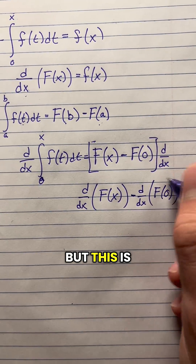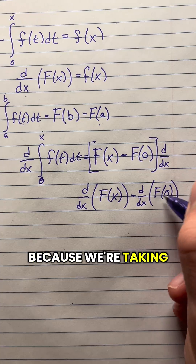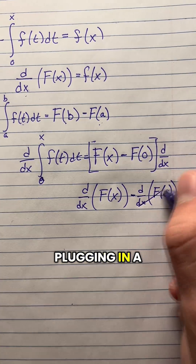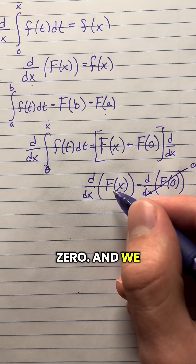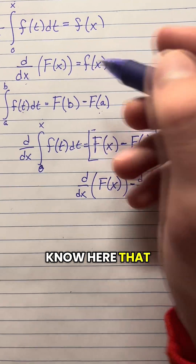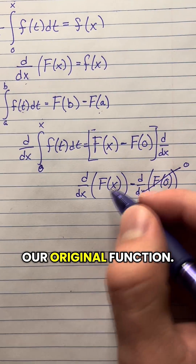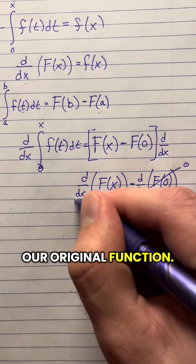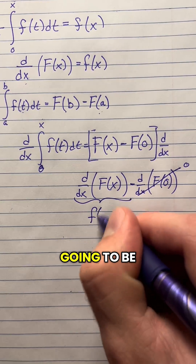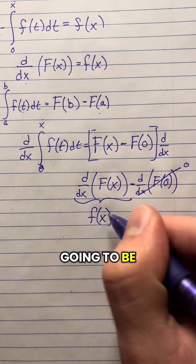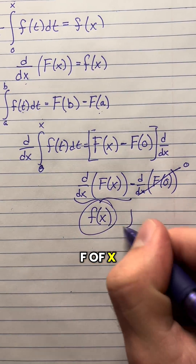But this is just a constant because we're taking a function and plugging in a number, so this is 0. And we know here that d/dx of F of x is just our original function, so this is going to be f of x.